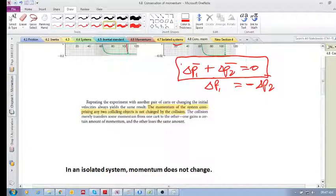It says the momentum of the system comprising any two colliding objects is not changed by the collision. The collision merely transfers some momentum from one cart to the other cart. One cart gains a certain amount of momentum, and the other loses the same amount.